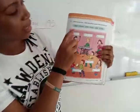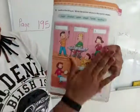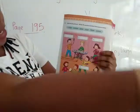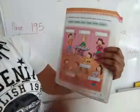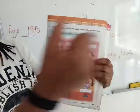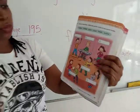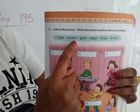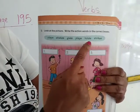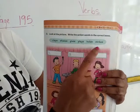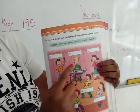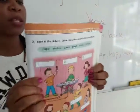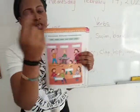Let's read the action words together: claps, shakes, gives — to give someone something — plays, holds — to hold something — and strikes. Let's read the words again: claps, shakes, gives, plays, holds, and strikes. Now look at the pictures numbered 1, 2, 3, 4, 5, 6, and fill in the boxes with the correct action words.